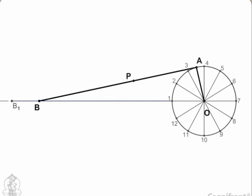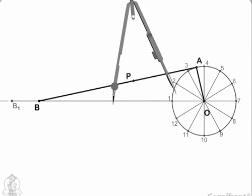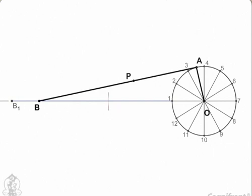Here, we have to trace the locus of the point P on the rod at a distance from point A. Now, again with center 1 and radius PA, cut the line 1B1 at point P1.